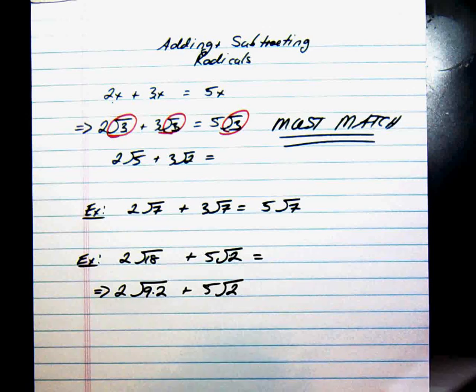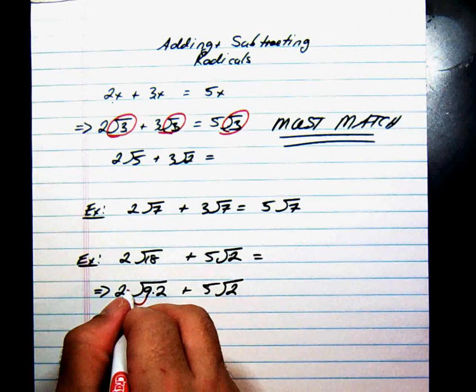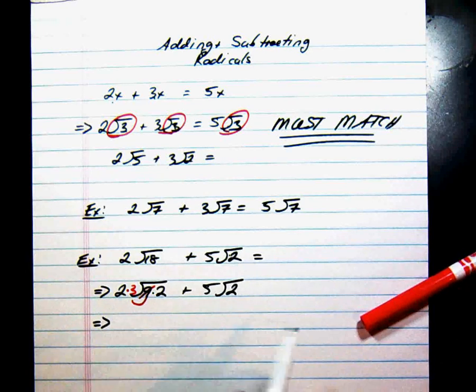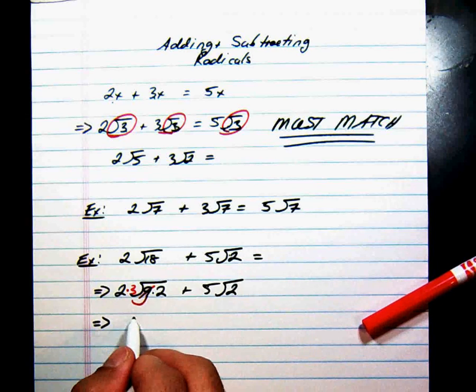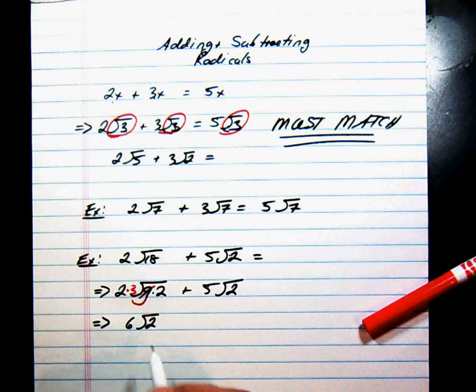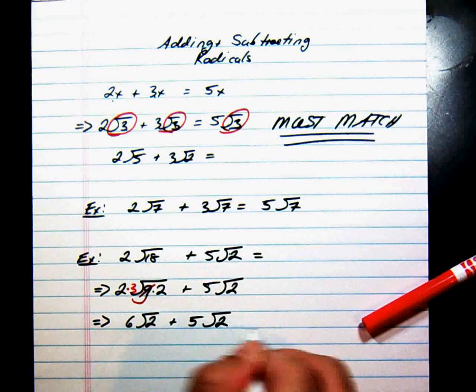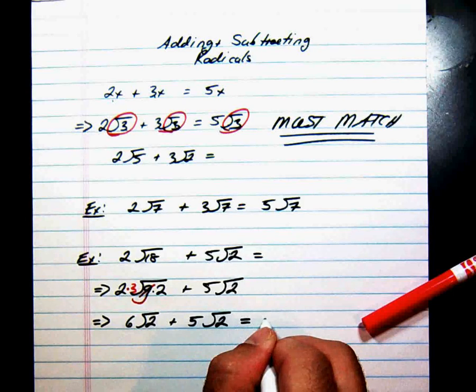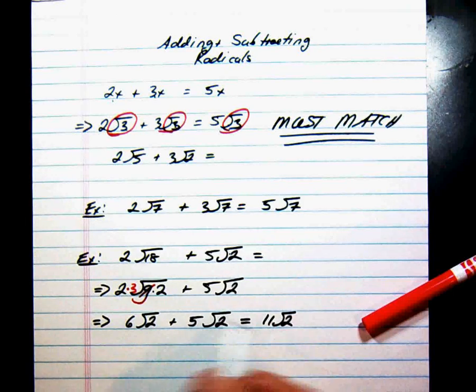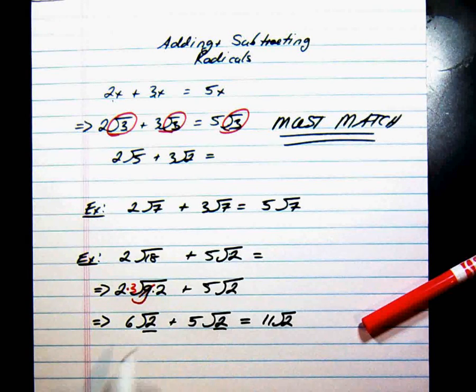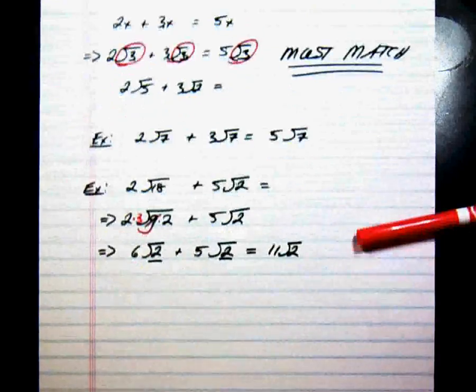Now, this 9 can come out as a 3. That's going to leave us with 2 times 3, 6 square roots of 2, plus 5 square roots of 2. And that's going to be equal to 11 square roots of 2. No problem, we can add and subtract them now because these match. Okay, one more problem.